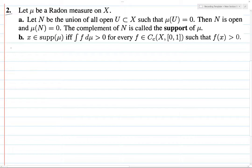All right, 7.2. Let's start with part A. So we're going to let U be the collection of open subsets of X whose measure is 0. And we're going to let N be the union over all U in script U of U.